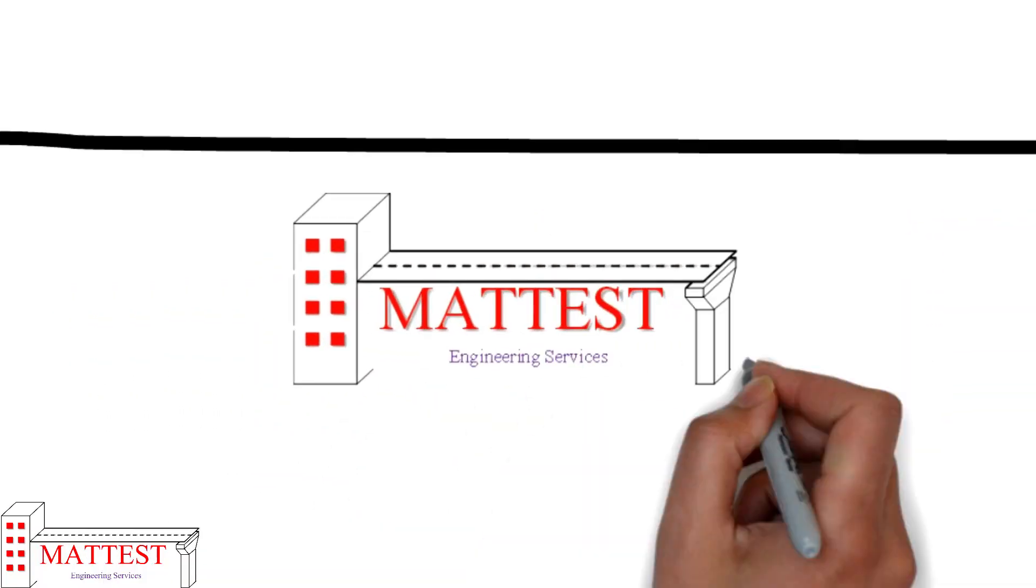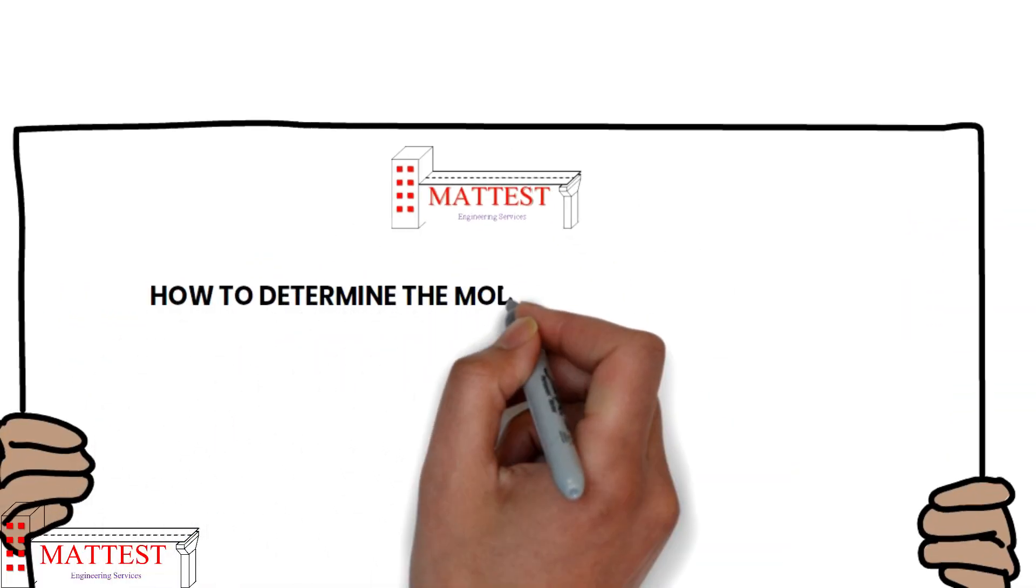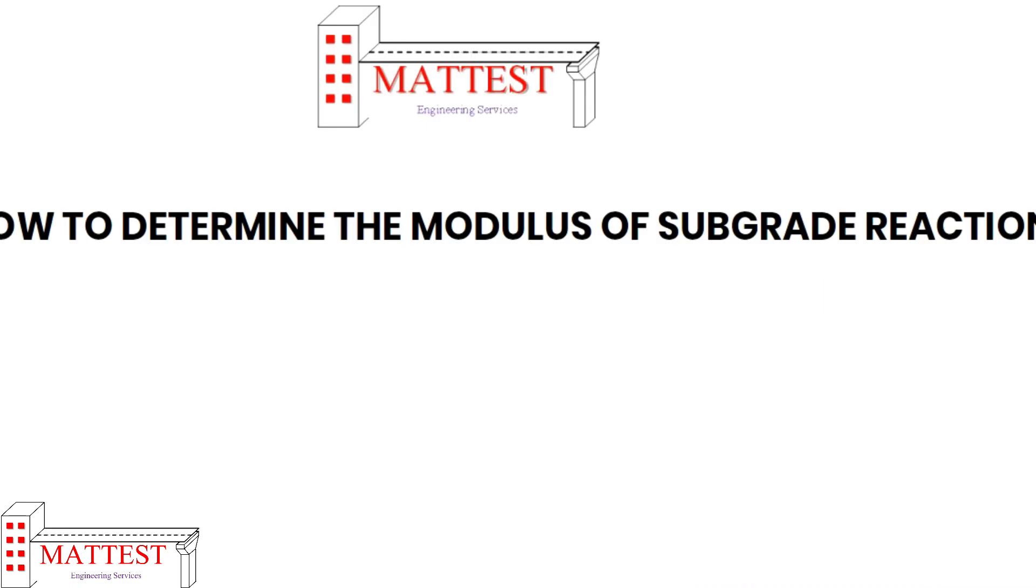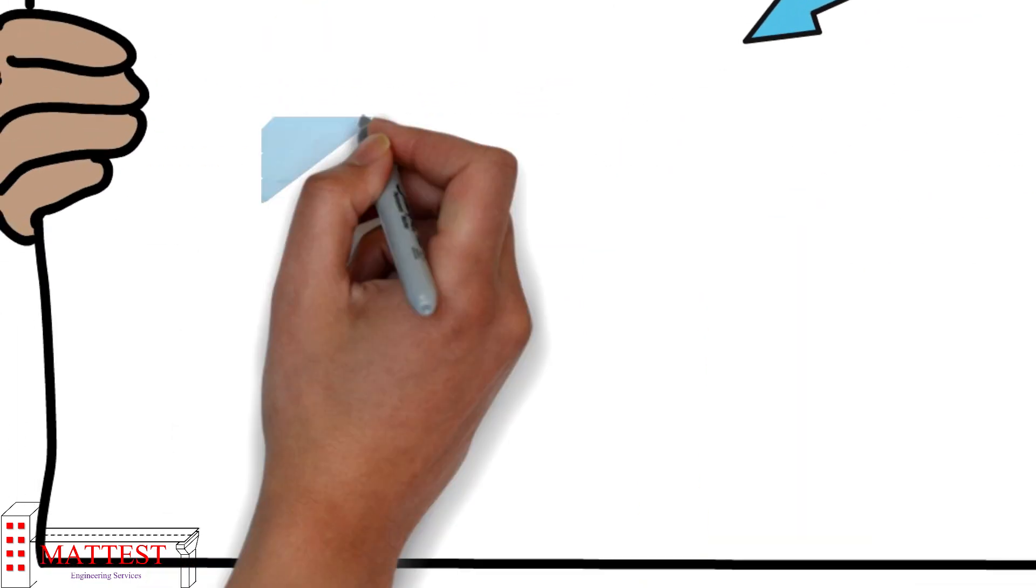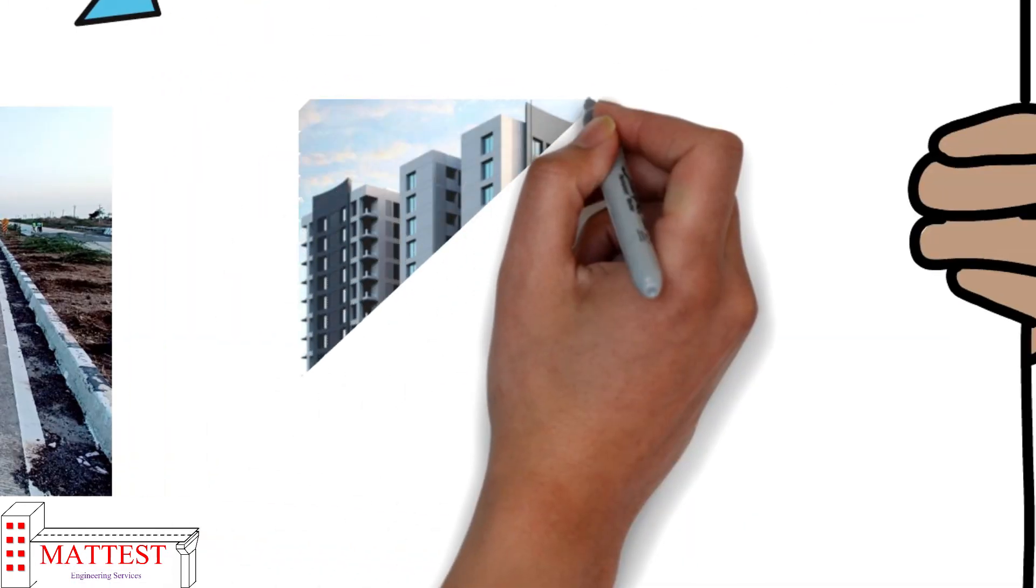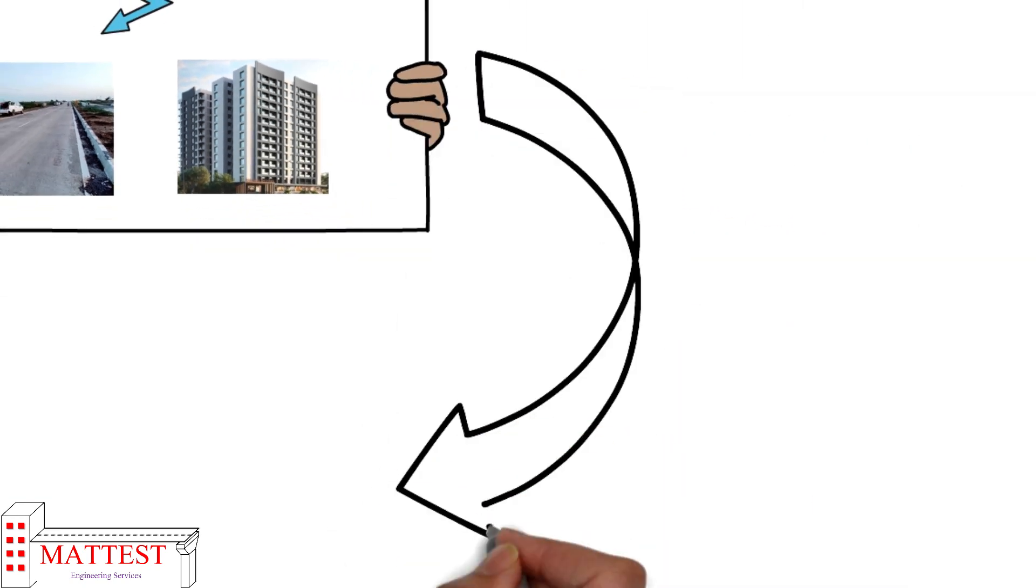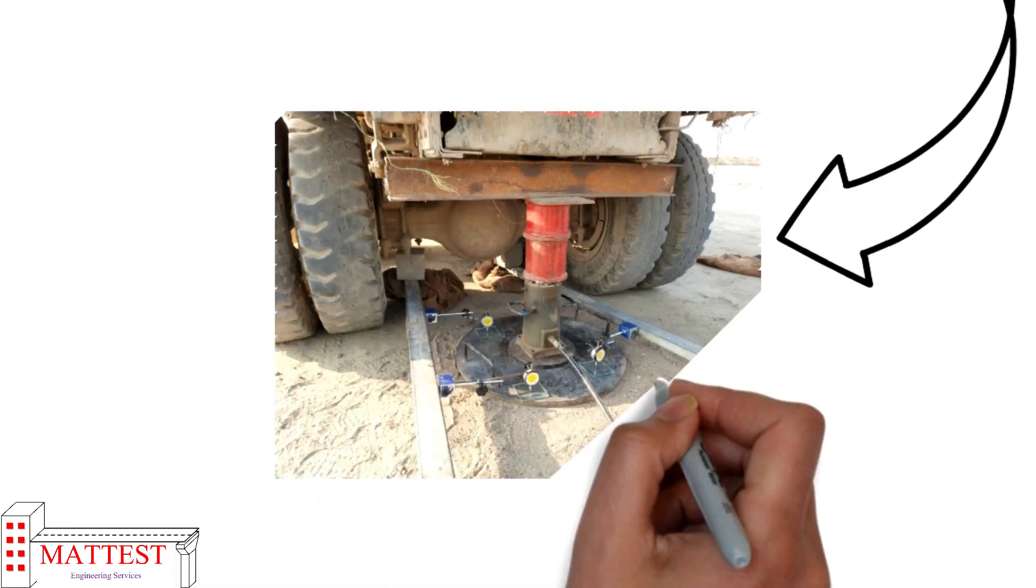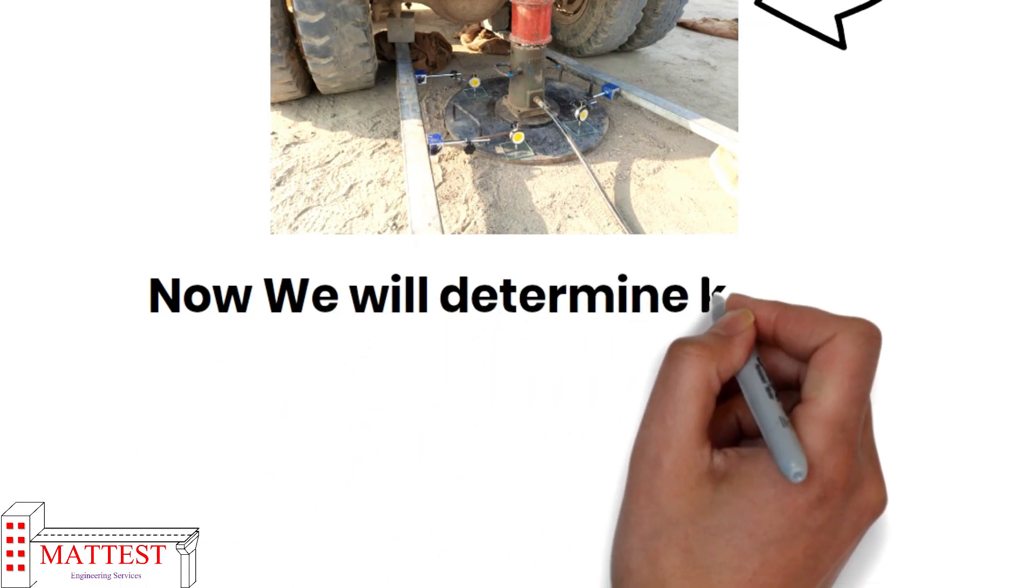Hello everyone, in this video we are going to see how to determine the modulus of subgrade reaction because it is the most important parameter which is used for pavement design as well as building design. For that, plate load test is conducted on field and from this test data we will determine the k value.